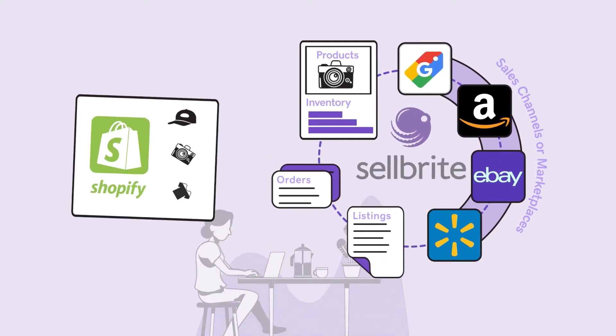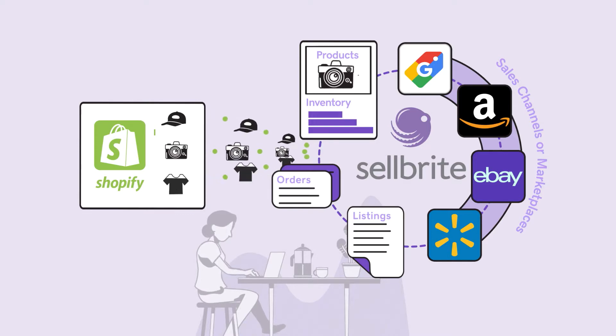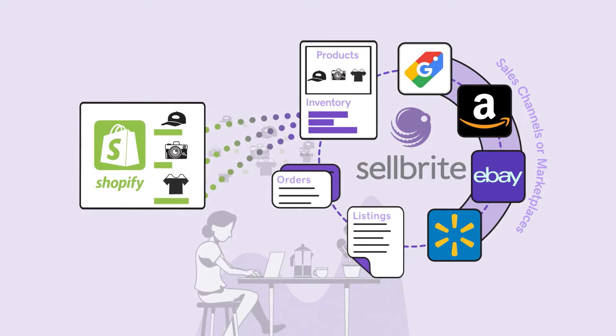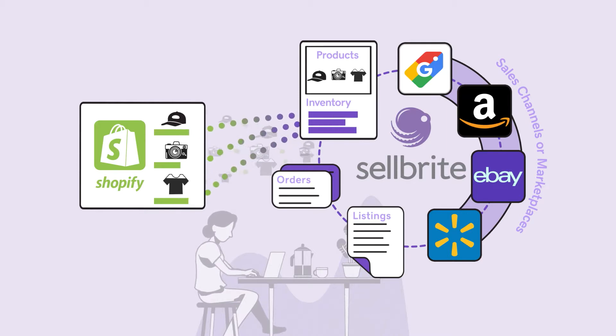Products are managed in your Shopify store and are imported automatically into Cellbrite. Any changes or adjustments to inventory or product information in Shopify will automatically be reflected in Cellbrite.